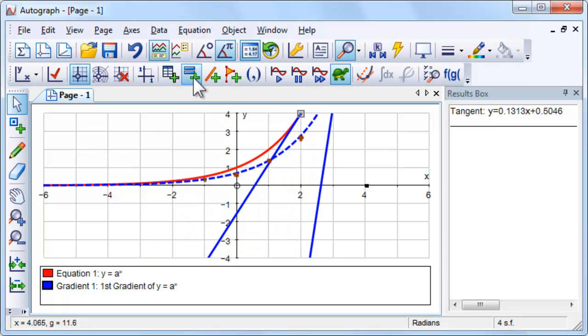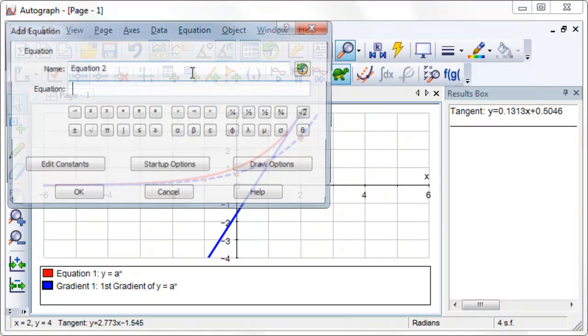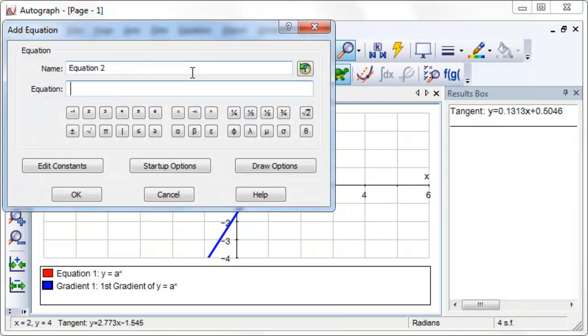The gradient function is y equals a to the power of x log a, so it crosses the y axis at y equals log a.